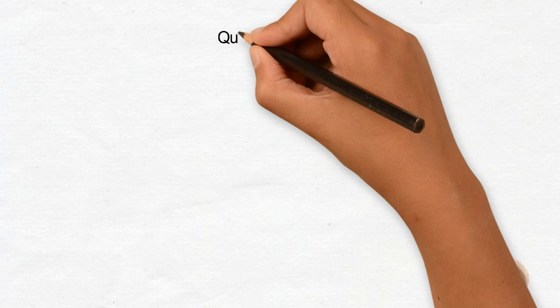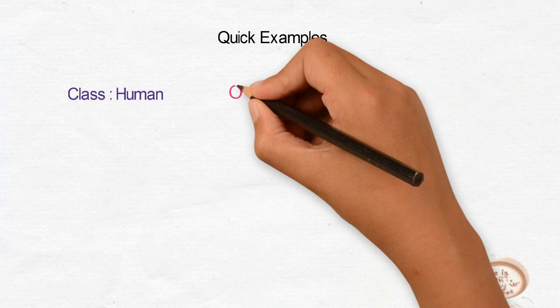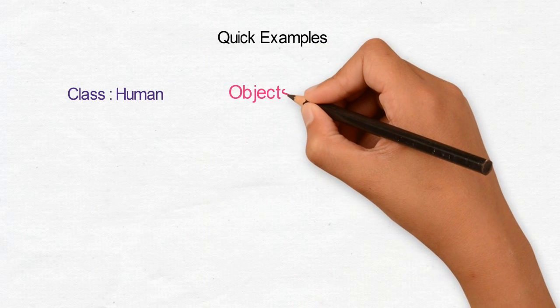Let's take an example of human. Human class. You can consider it as a category in which you can put man, woman,